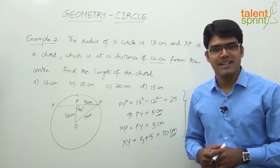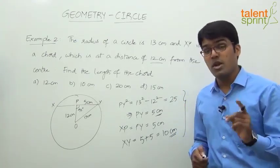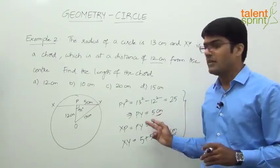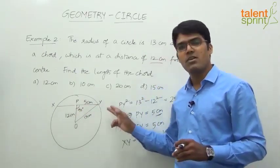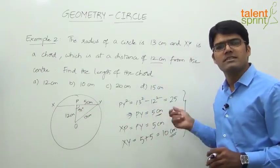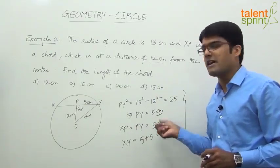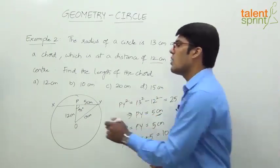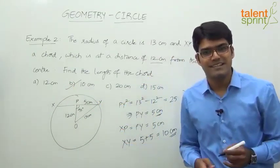So the important point which you need to remember is double this. He is asking us to find out the chord length of the chord XY. Simply double this because this is half of the chord. Half of the chord is 5, full chord will be double of 5, which is 10. So option B, 10 centimeters, would be the correct answer.